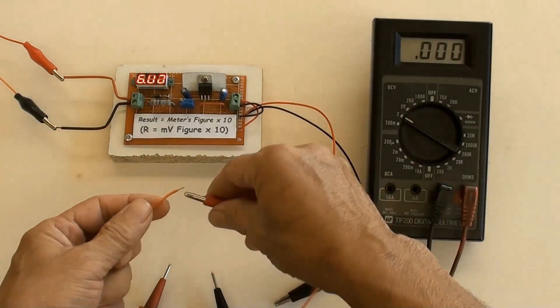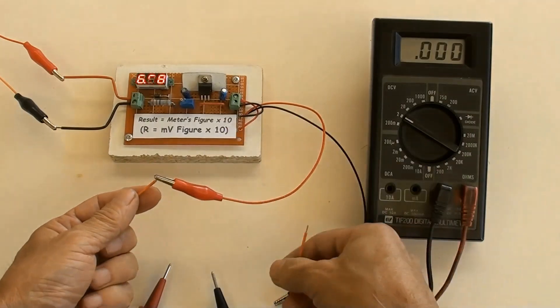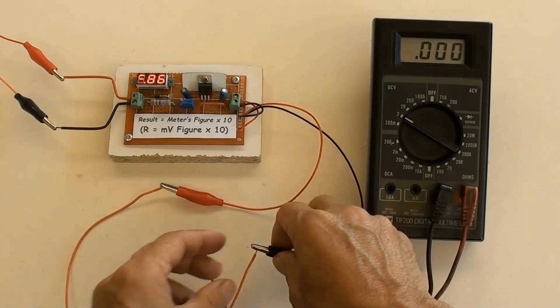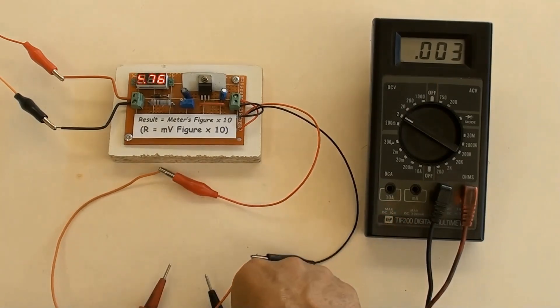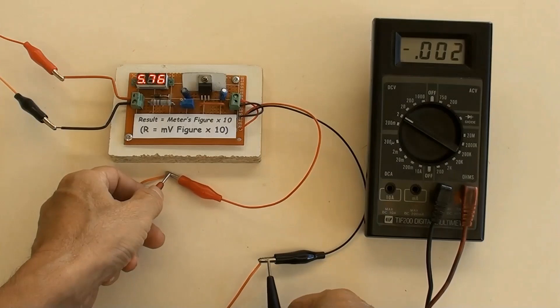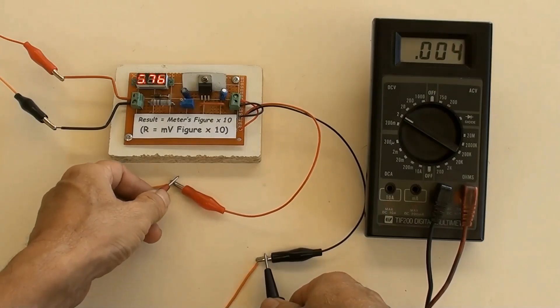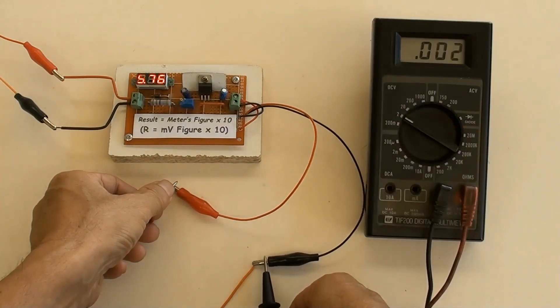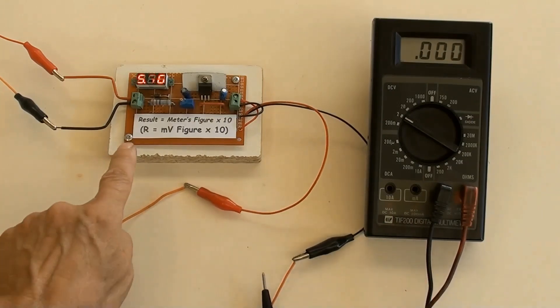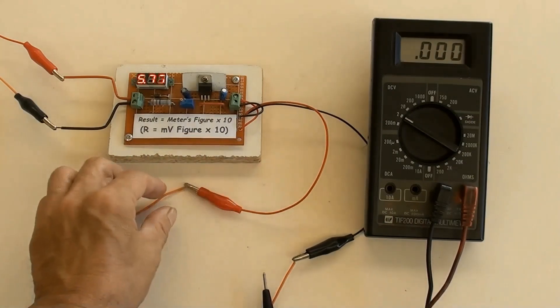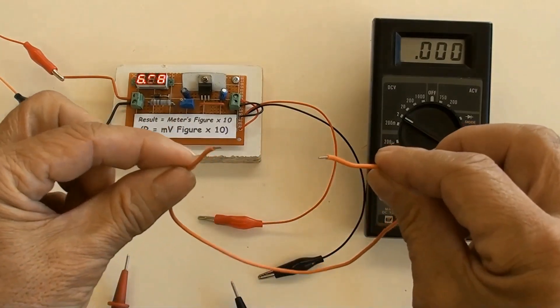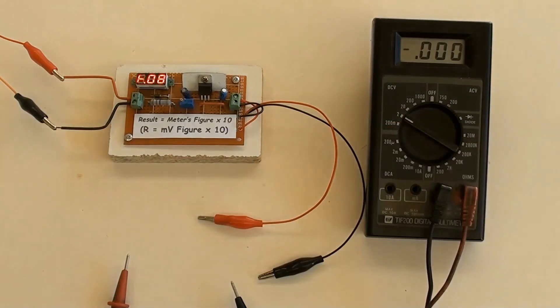Measuring this wire. Multimeter indicated 0.002 volts, then using formula on the sticker, 10 times equals 0.02 ohms, in other words, 20 milliohms. So this wire's resistance is 20 milliohms.